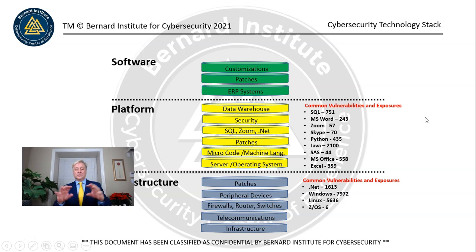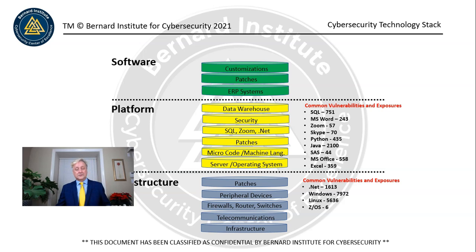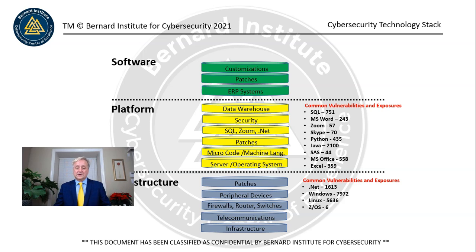The software level is the top layer. This is where when you download an app from the App Store or the Play Store and install it on your system, it sits on top of the platform that sits on top of the infrastructure — this is how it's layered together. I have ERP systems listed here, but they could be apps as well. An ERP system is an Enterprise Resource Planning System. There are some big ones like Oracle, JD Edwards, and SAP. These are used mostly by commercial and government organizations that have a lot of employees and products.